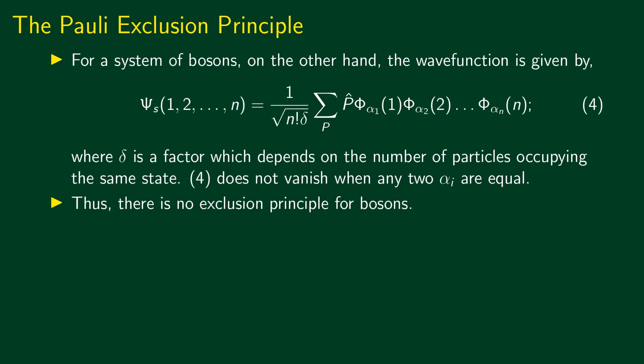For a system of bosons, the symmetric wave function of the n-particle system is given by 1 over root(n-factorial times delta), where delta is a normalization factor depending on the number of particles occupying the same state, times the sum over all n-factorial permutations. Clearly, this wave function does not vanish when any two alpha-i are equal, so there is no exclusion principle for bosons. As an exercise, please construct the antisymmetric wave function for three identical fermions using the Slater determinant and convince yourself that it is consistent with the Pauli exclusion principle.